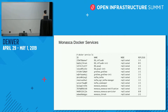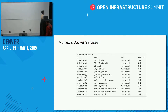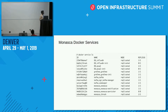These are the Monasca Docker services we are running: databases like InfluxDB and MySQL, Grafana, Kafka, and Monasca components including notification, persister, threshold, and API.